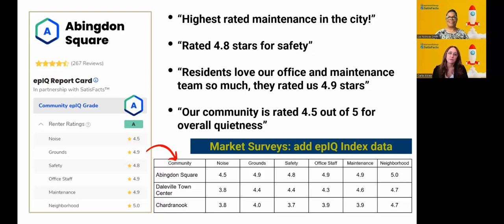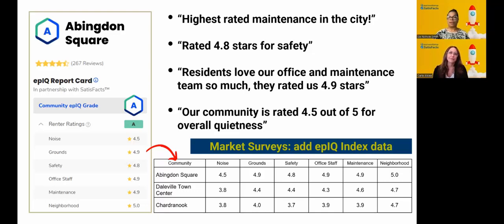Renters want to know: tell me about your maintenance, tell me about the office, how quiet is this community? As a marketing strategy, if you are leading your advertising or supplementing it with operational data, it makes a big difference. When someone is looking at multiple communities and everyone's talking about the resort-style swimming pool, but your community is the only one talking about the noise rating or the maintenance rating — and these aren't numbers you're making up, they come from real resident and prospect experiences — those little tricks can really move the needle when prospects are looking at multiple options.